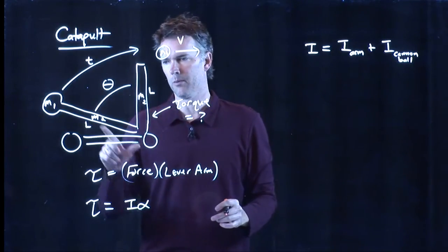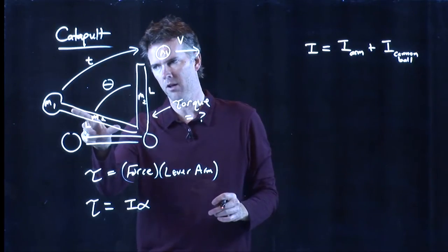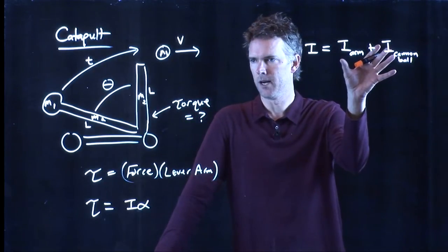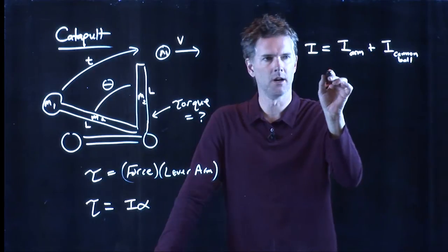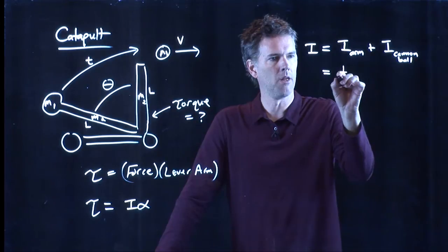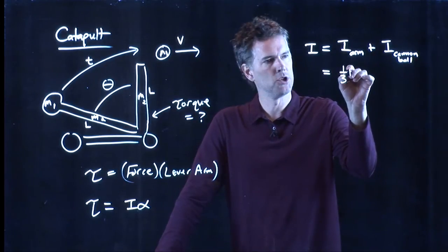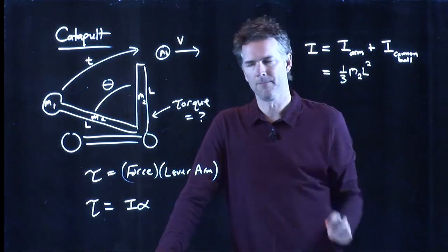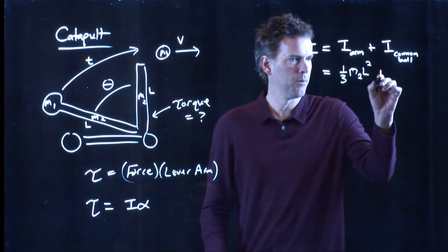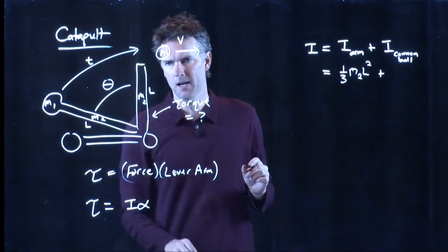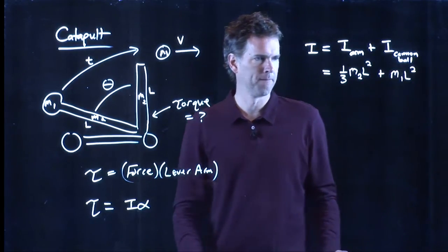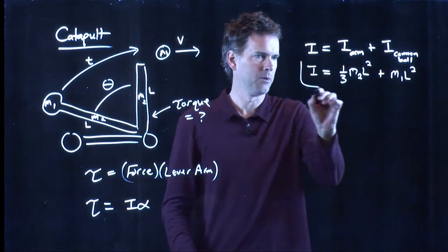i is i of this arm plus i of the cannonball. We have two things there. We have not only this pole, the arm itself, but we have the item that we're launching. And we can figure those out. We know what the moment of inertia of a uniform beam is. It is one-third m2 l squared. That's a uniform beam rotated through one end. That's the moment of inertia. And we also know what the moment of inertia of the cannonball is at the end. It is just m1 times l squared. So we know i.